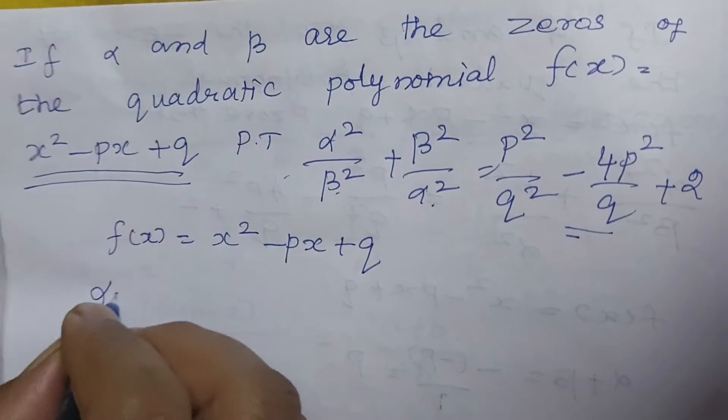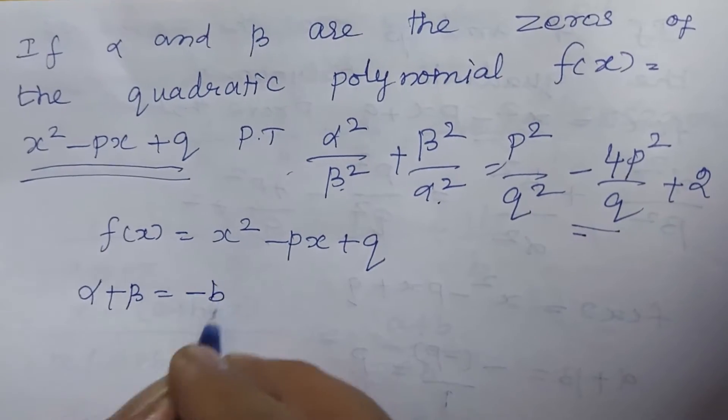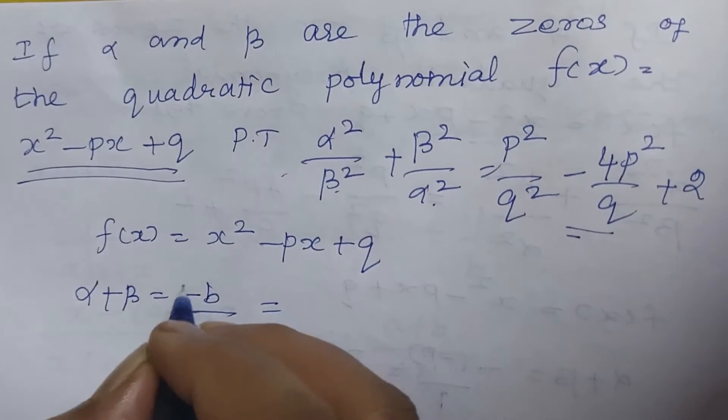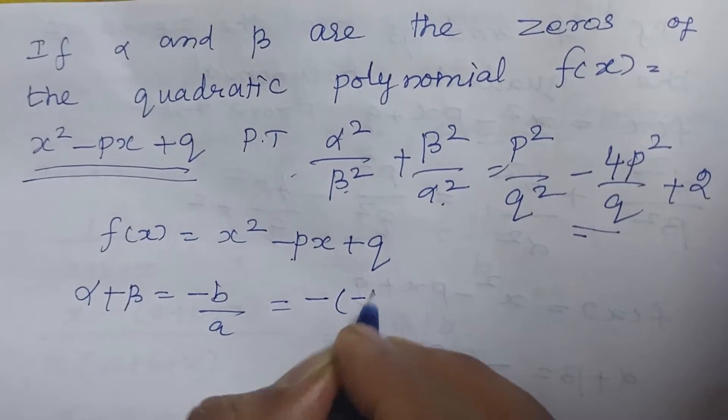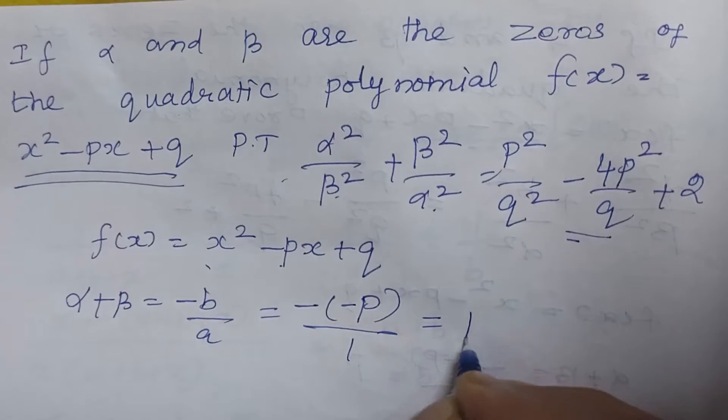Here alpha plus beta, that is sum of the roots. Sum of the roots is minus b by a. Here it is a formula. So here in the place of b you are having minus b, then pa 1. So what you get is p.